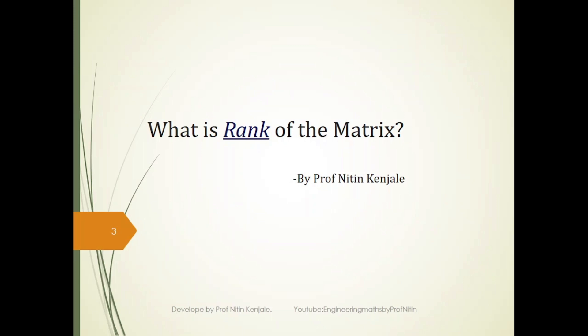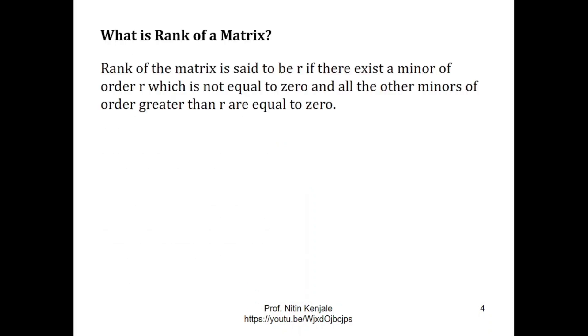So let us see definition of rank of the matrix. We say that rank of the matrix is r if there exists a minor of order r which is not equal to 0 and all the other minors of order greater than r are equal to 0.